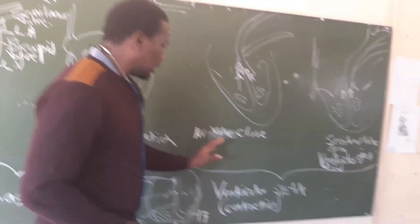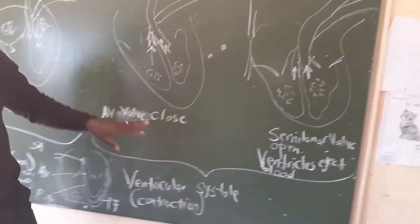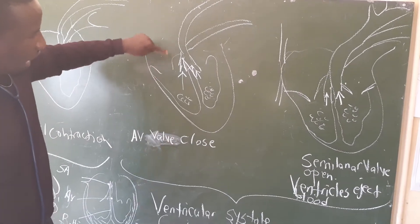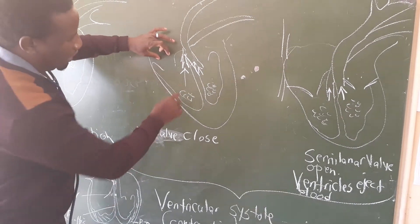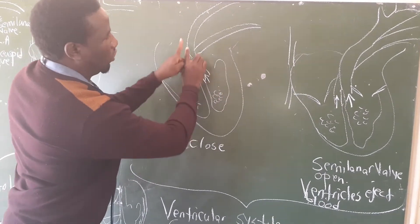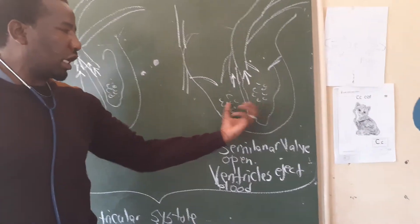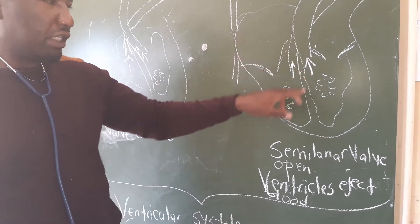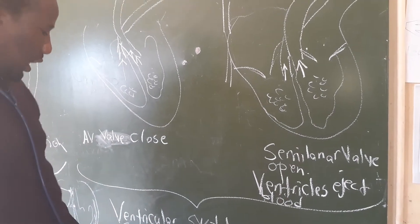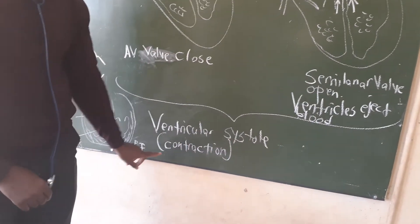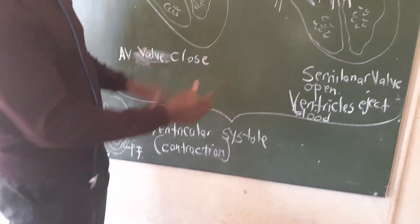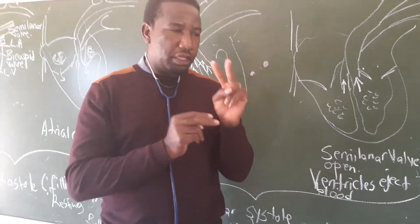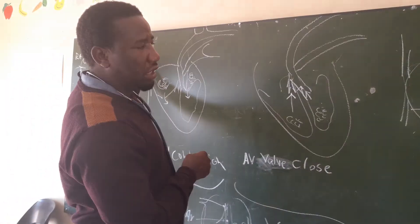Then the ventricles go on to contract. But for that to happen, the atrioventricular valve must close. When it closes, the ventricles contract and push the blood out. This stage is called ventricular systole, meaning it is the contraction of the ventricle. When this happens, you will hear the big beat. Always two beats — the first one is because of the atria, and the second one is the ventricular beat.